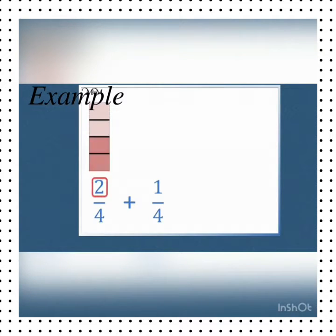In the next example also you can see if we only add numerators we will get our answer, that is 3 by 4. Let's make this concept more clear with the help of some more examples.